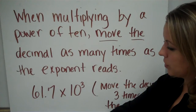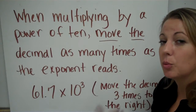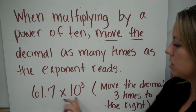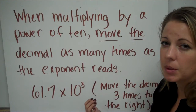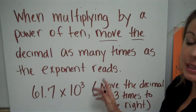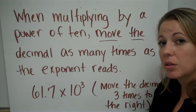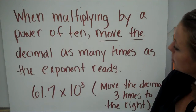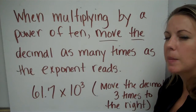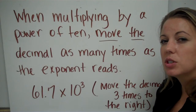When multiplying by a power of ten, move the decimal as many times as the exponent reads. You're going to be given a number and multiply by a power of ten — or ten with an exponent. That exponent is going to tell you how many times to move that decimal to the right, because your number is getting bigger. So, 61.7 and you're going to move the decimal three times to the right. Pause and think about it, see if you can solve it.